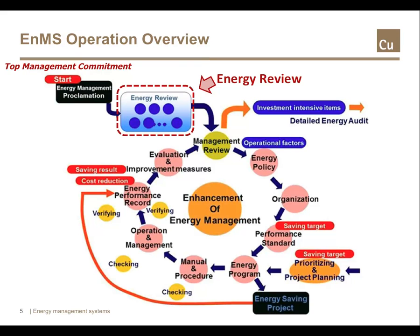Plan, implement, review and improve can also be described in a flow diagram as a plan, do, check, act cycle. They're essentially the same cycle.